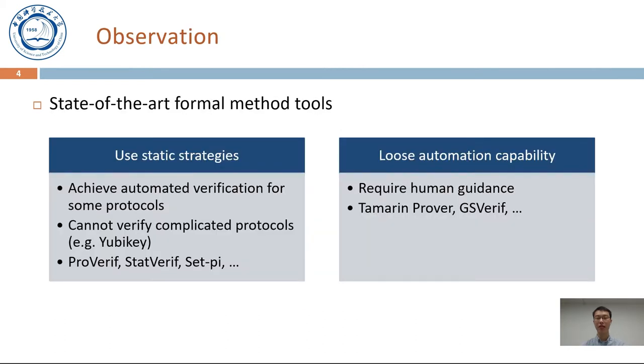Several state-of-the-art formal method tools, such as ProVerif and StateVerif, use static strategies. They can achieve automated verification for some protocols, but cannot verify complicated protocols, such as the Yubikey protocol. Other tools, such as Tamarin and GSVerif, lose automation capability to verify more protocols. They require human intervention to guide the tool.